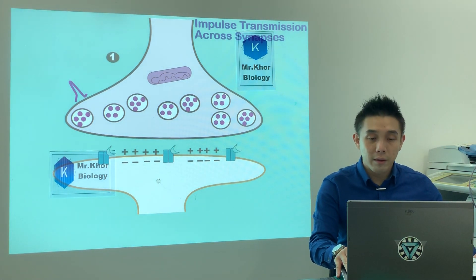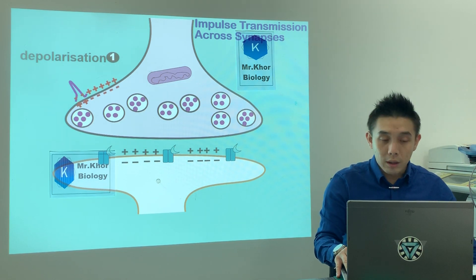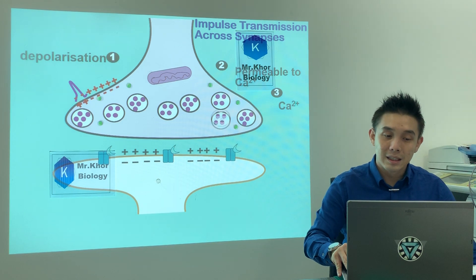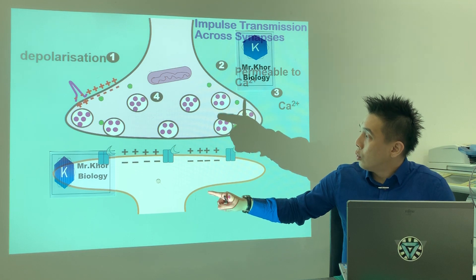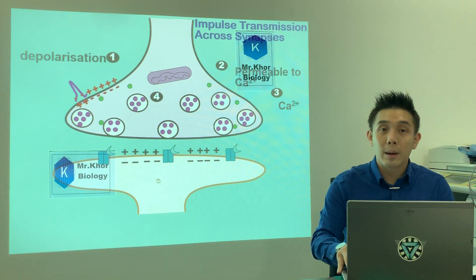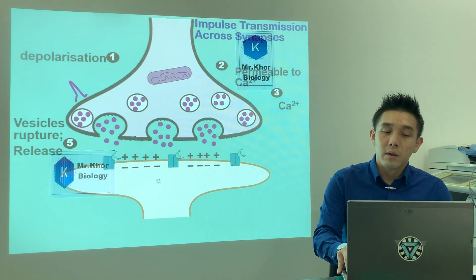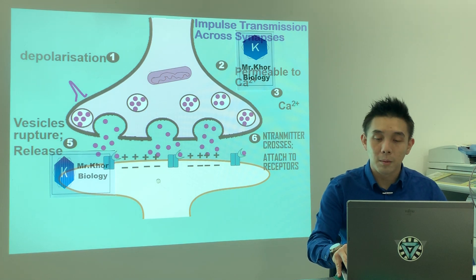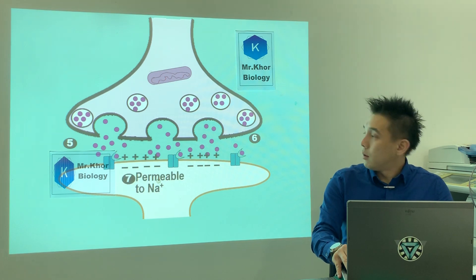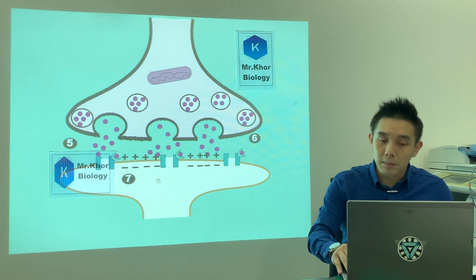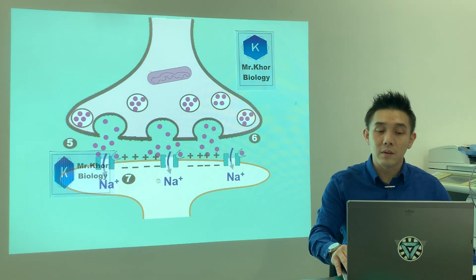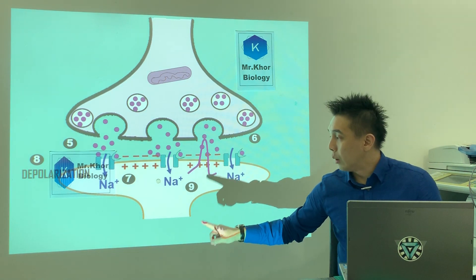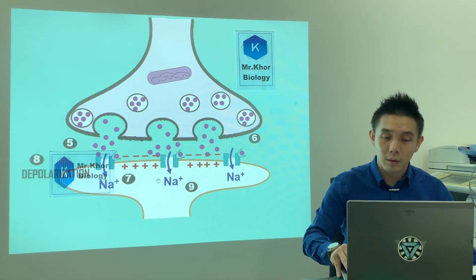To recap: impulse arrives, depolarization occurs, membrane becomes permeable to calcium ions, calcium ions enter, synaptic vesicles move towards the pre-synaptic membrane and rupture releasing neurotransmitters — acetylcholine moves across the synaptic cleft and binds to receptors. The post-synaptic membrane becomes permeable to sodium ions, sodium ions enter, depolarization occurs again, action potential is generated and moves along the next neuron.